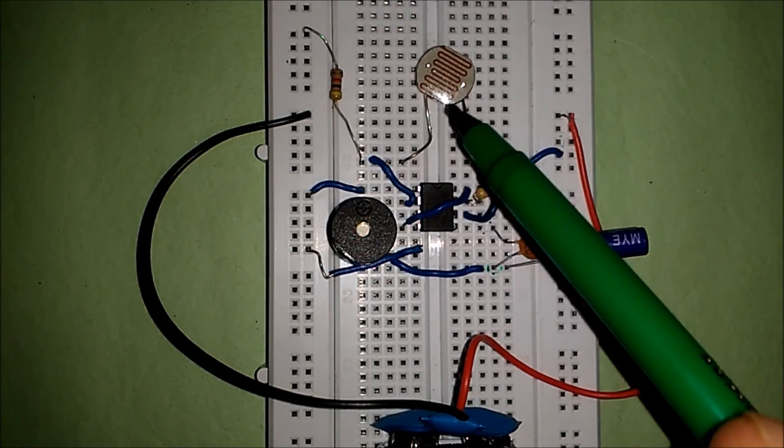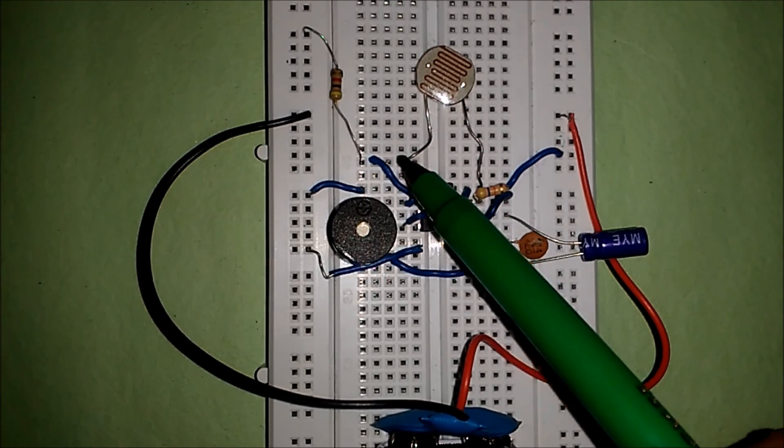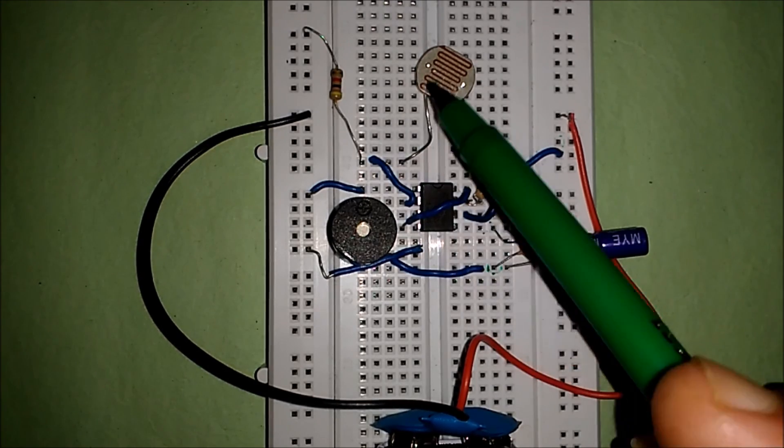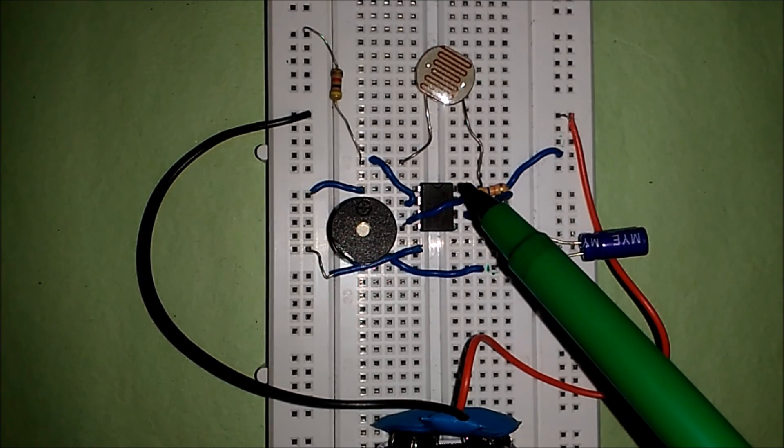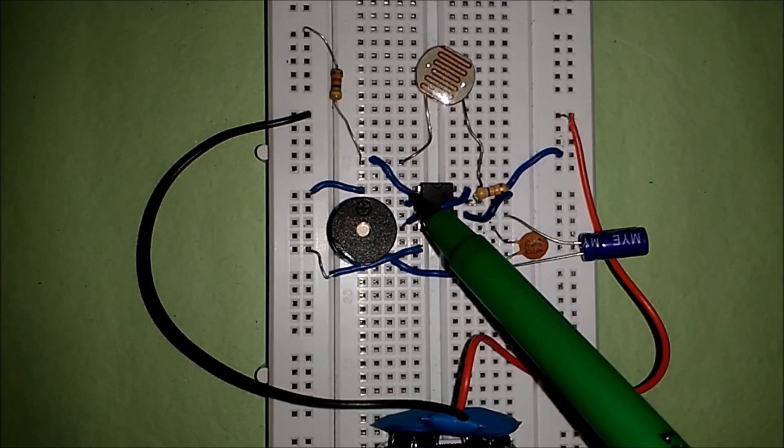Whereas, an LDR is connected between this and Positive of Supply. So, LDR is basically connected from your first pin to your Trigger pin.